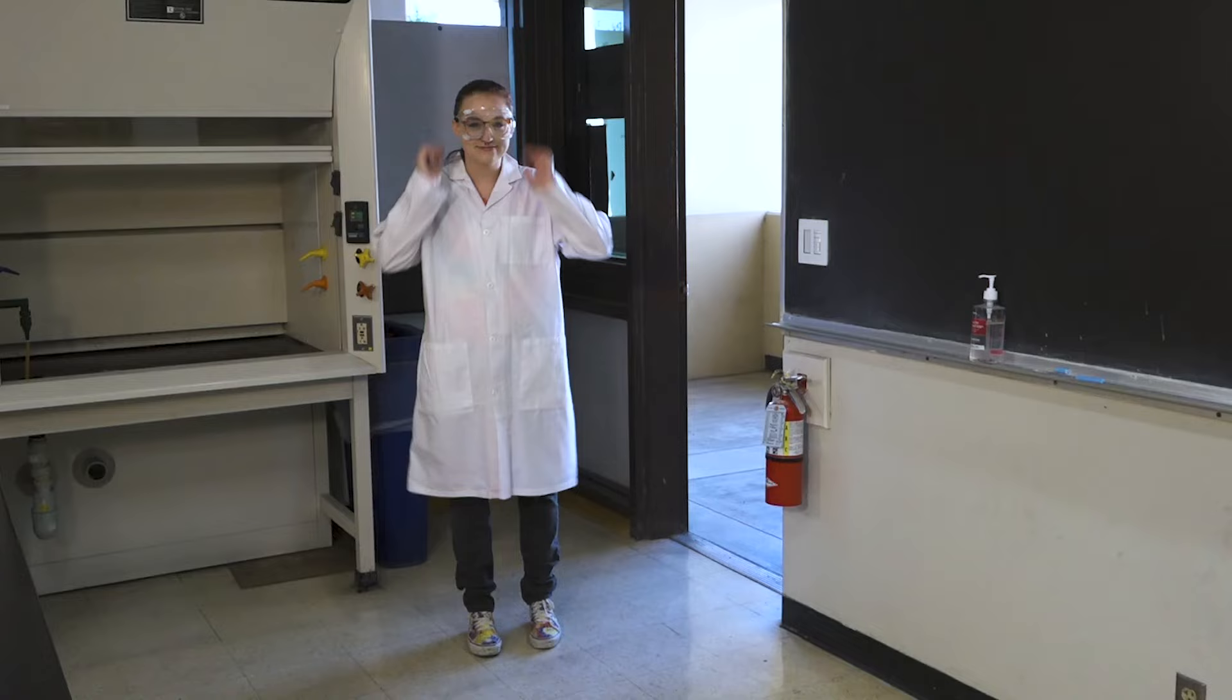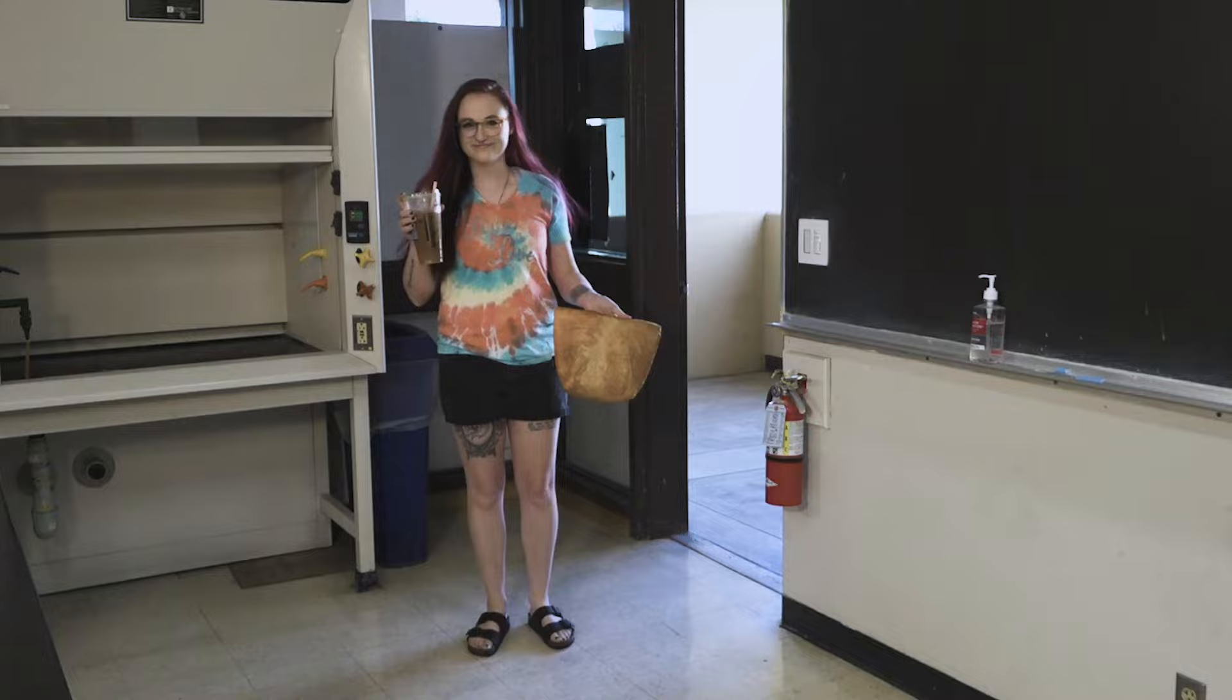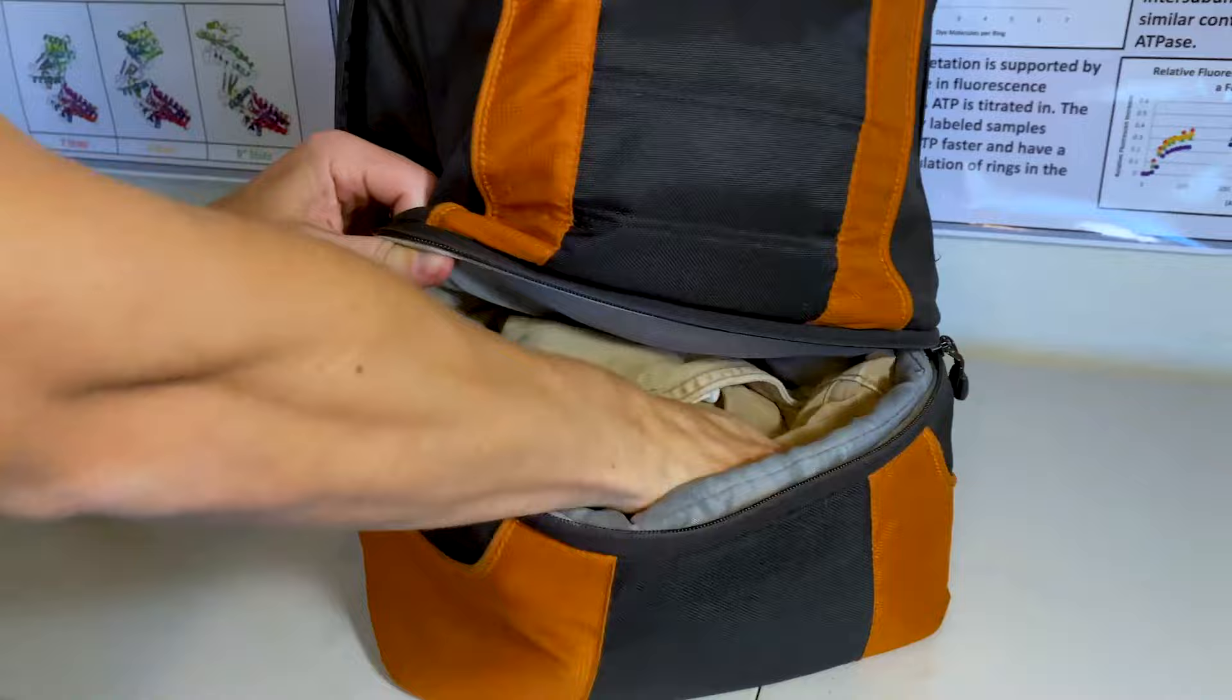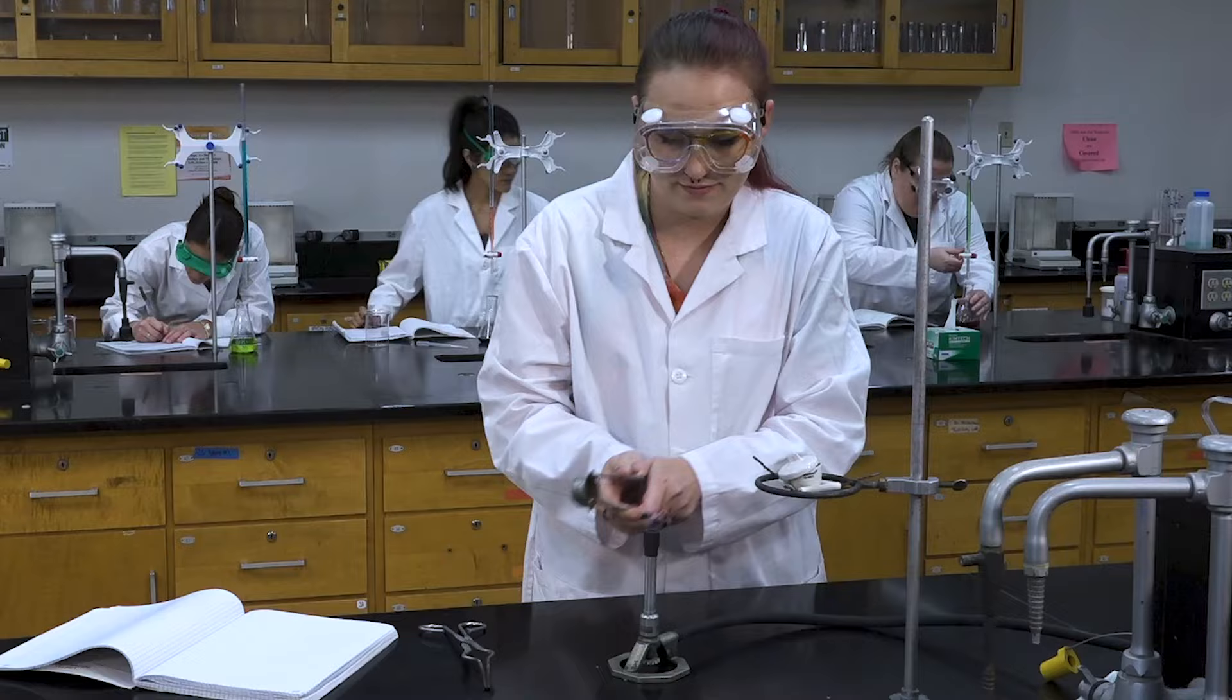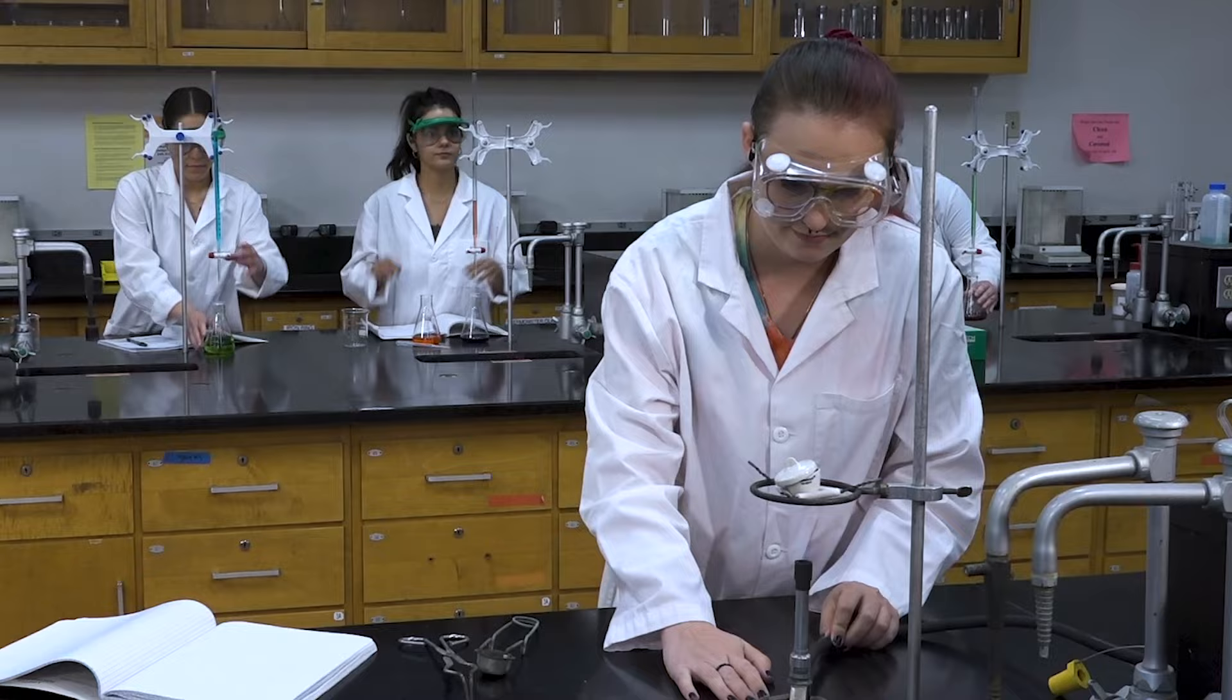If you do not have proper laboratory attire, you will be asked to leave and you will not be able to complete your experiment. It's smart to throw an extra pair of pants and shoes into your backpack or car, just to be safe. Your lab coat and goggles can be stored in the lab. The chemistry lab can be a dangerous place, but many of these dangers can be mitigated by proper laboratory attire.